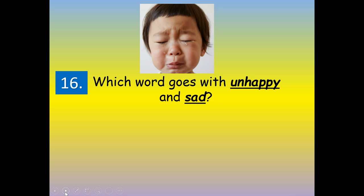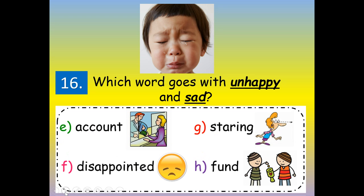Number sixteen: which word goes with unhappy and sad? Would account go with unhappy and sad? Disappointed? Staring? Or fund? Disappointed — D-I-S-A-P-P-O-I-N-T-E-D. Disappoint is the root word, and disappointed means it already happened in the past.